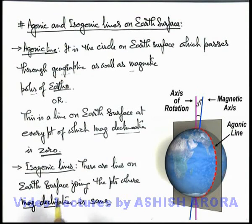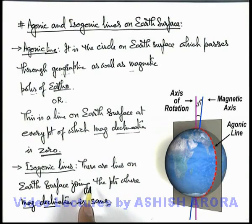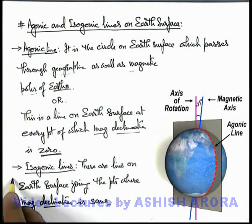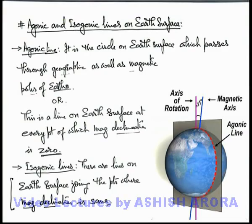For every declination angle there will be a separate isogonic line. As it is difficult to visualize on paper, we are not studying through a picture, but the definition itself is sufficient to understand what exactly an isogonic line is.